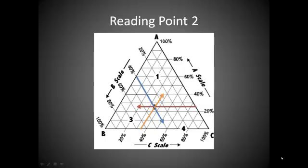Here we are looking at point number 2, and point number 2 on this graph would be read as approximately 25% A, 40% B, and 35% C.